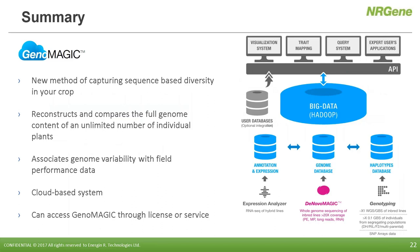We've covered the full Genomagic pipeline, including the construction of the databases and the foundational concepts. Genomagic is a cloud-based Hadoop system integrating the databases I've described. Access to the data is through an API calling layer. EnerGene has built tools, including a query system and the IGV browser, to easily access information for visualization and downstream analysis. Yael will now demonstrate some of these features.